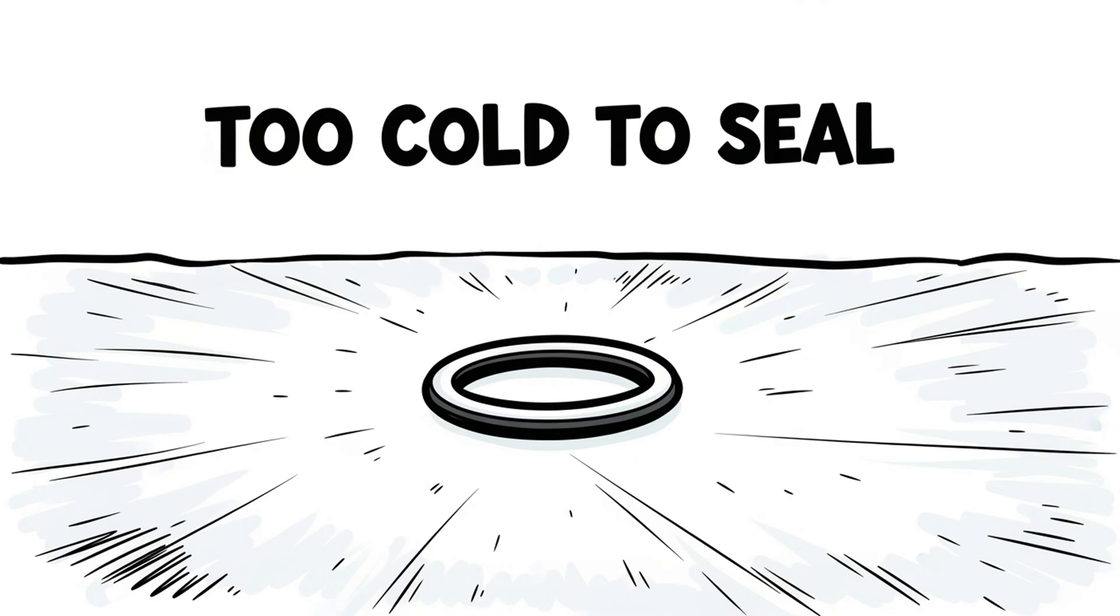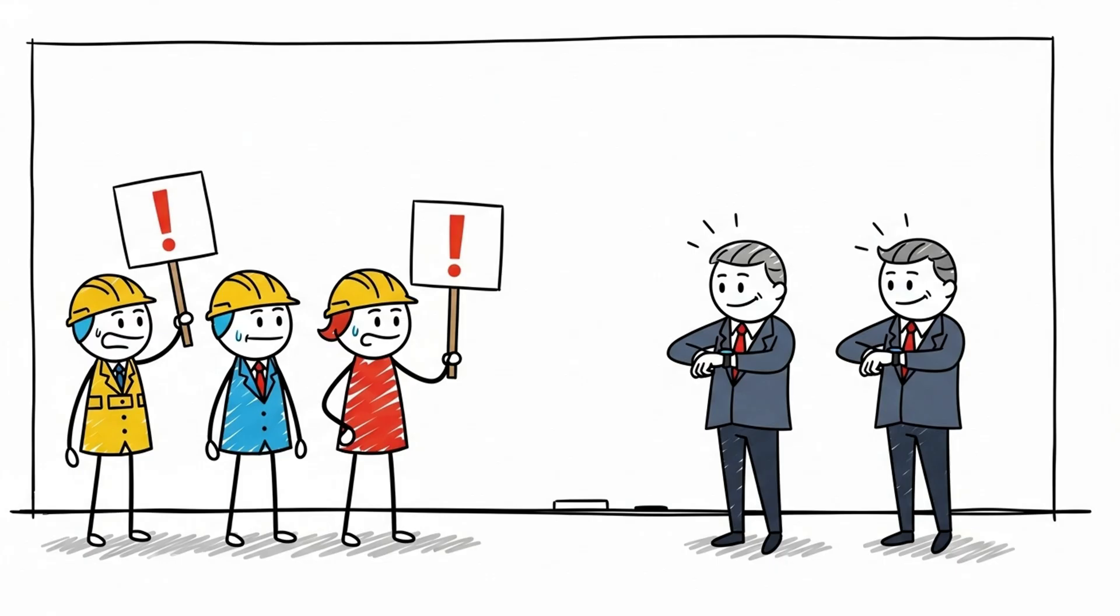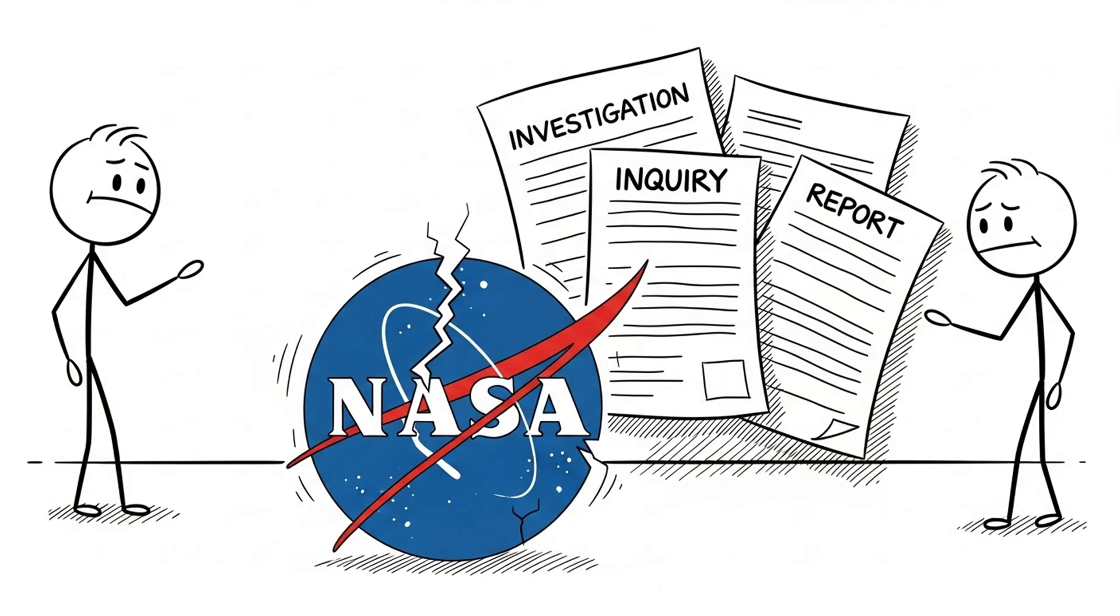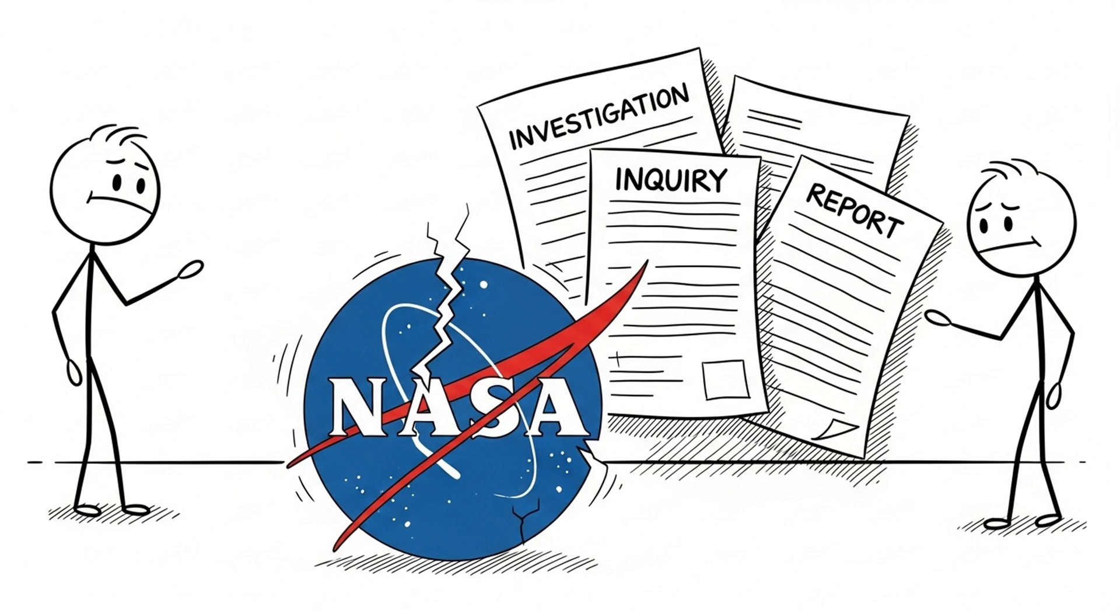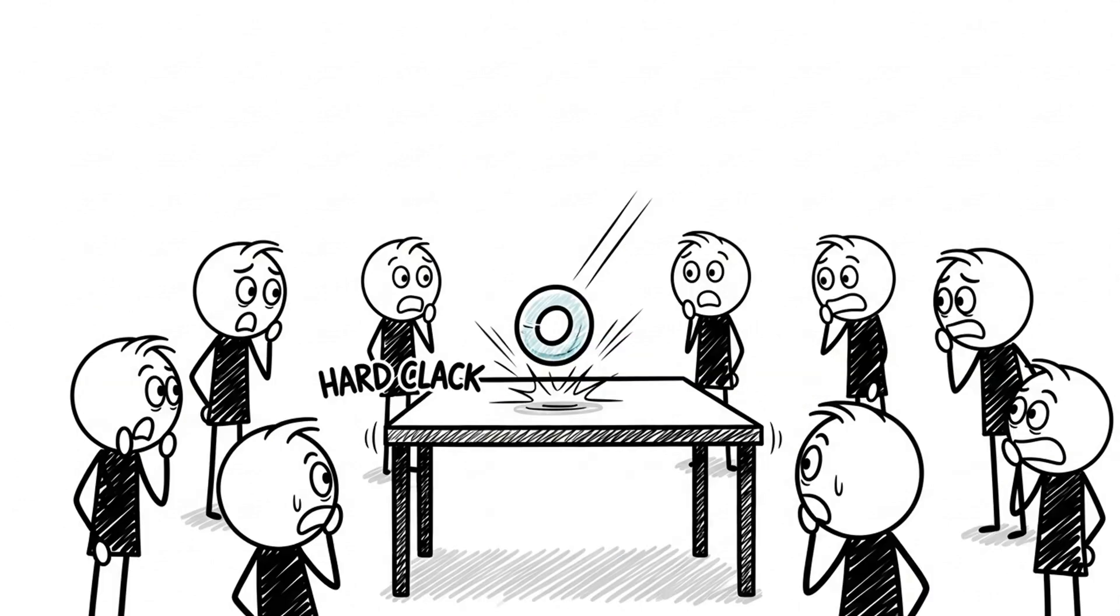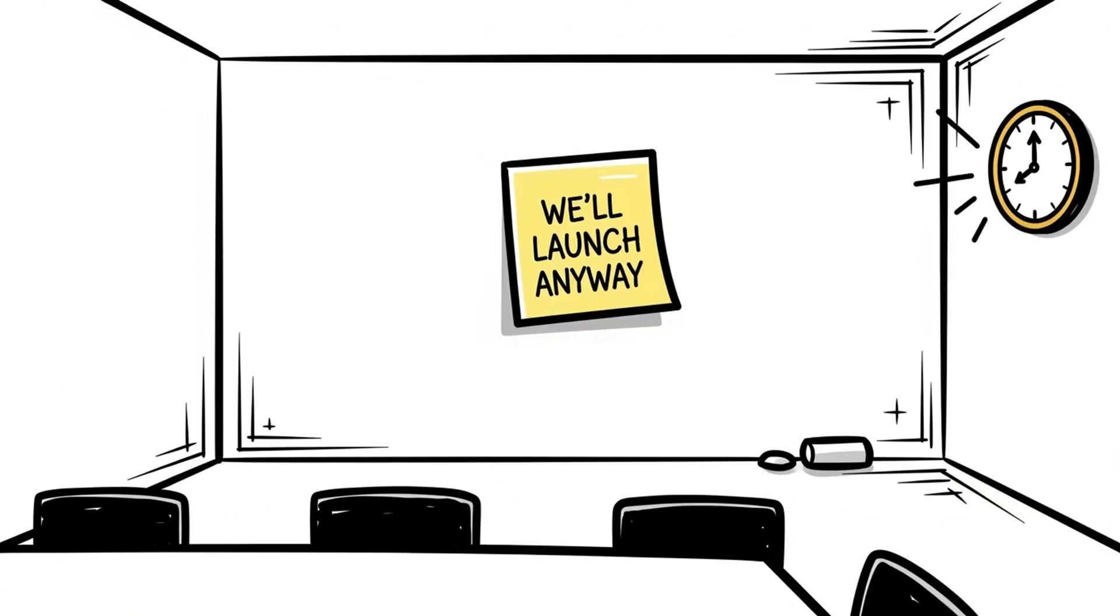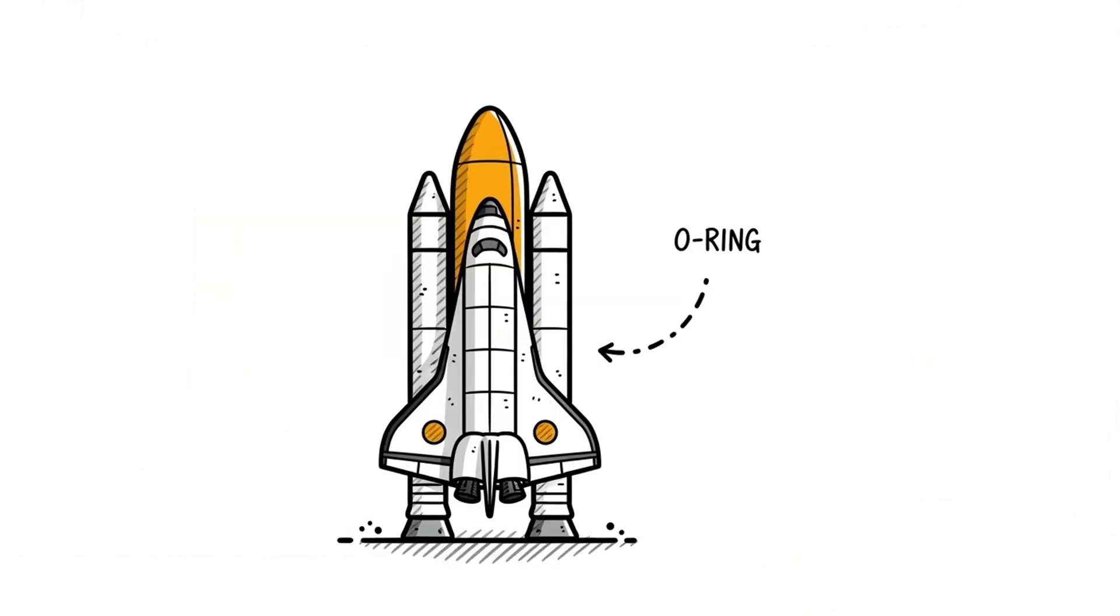The cause wasn't a grand design failure. Just one rubber ring that got too cold. Engineers had warned about this exact problem. But no one wanted to delay the launch again. The Challenger tragedy shook NASA. The shuttle program was paused. Trust was broken. Later, Nobel physicist Richard Feynman joined the investigation. He made the flaw visible with a simple demo. He dropped it, stiff and brittle, onto the table. The room fell quiet. Sometimes disasters don't start with explosions. They start with silence. A tiny, overlooked detail can bring down giants.